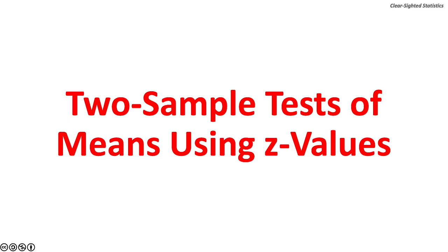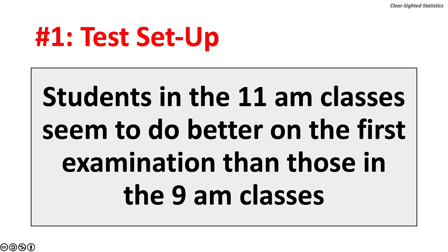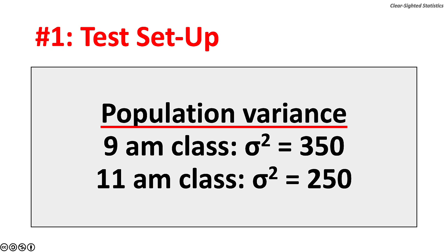For the two-sample z-test of independent means, Dr. V teaches two classes — one at 9am and another at 11am. Students in the 11am classes seem to do better on the first exam. From his grade books, he presumes the population variance for the 9am class is 350 and 250 for the 11am class. Two requirements to use z-values: population variances must be known, and both samples must have at least 30 observations. If either condition is not met, a two-sample t-test must be used.